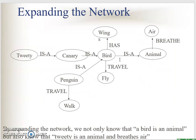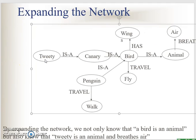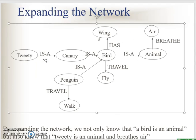Let's expand this network. We add tweety here — tweety is a canary. We also have animal, whereby bird is an object from animal, and animal breathes by air. Try and read this semantic network. Also look at the penguin, whereby penguin travels by walking, not flying. That's why penguin will have its own travel and walk object.